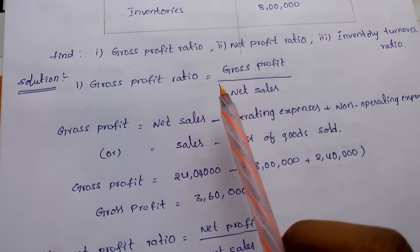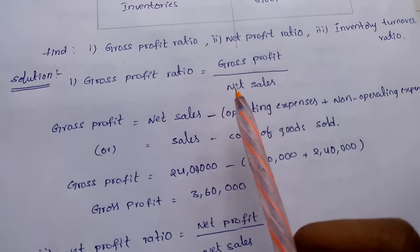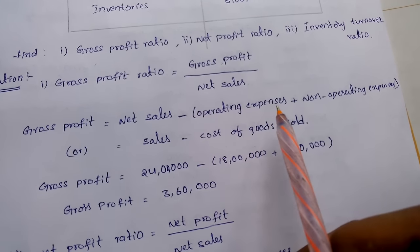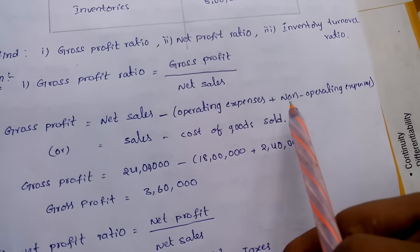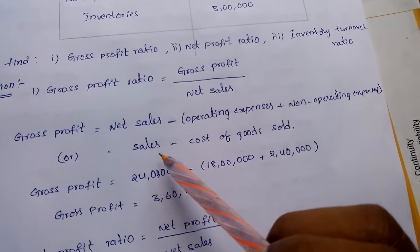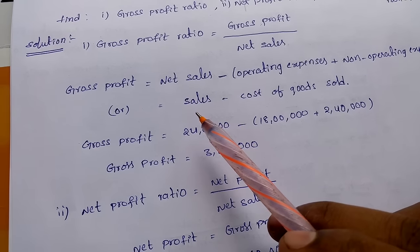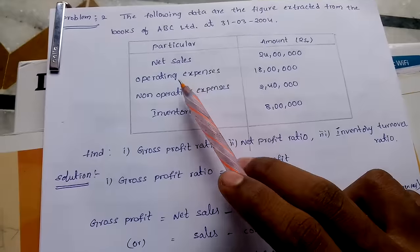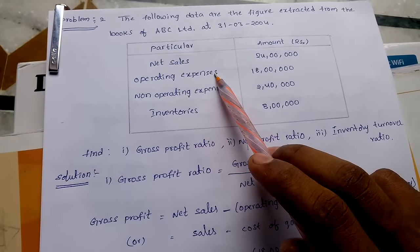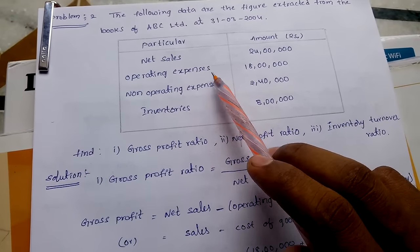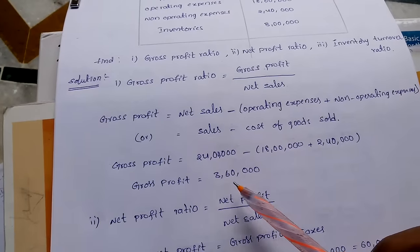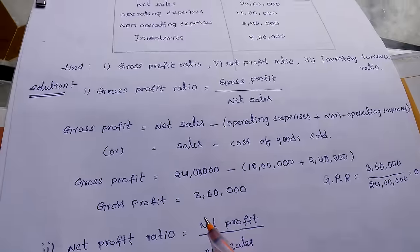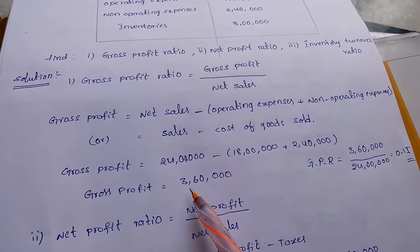The gross profit ratio formula is gross profit divided by net sales. The formula for gross profit here is net sales minus operating expenses plus non-operating expenses. Another formula for gross profit is sales minus cost of goods sold. Net sales are given and cost of goods — operating expenses and non-operating expenses — are given, so we just need to simplify. Therefore gross profit equals 3 lakhs 60,000.